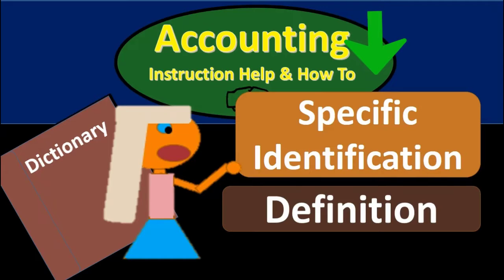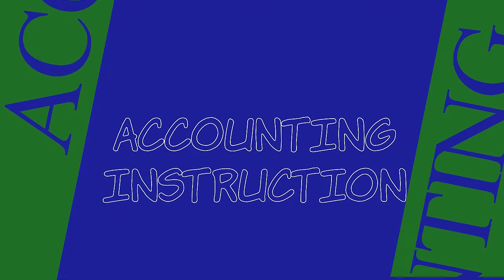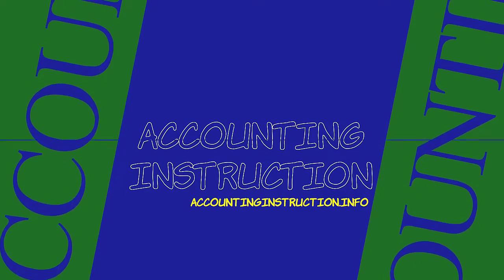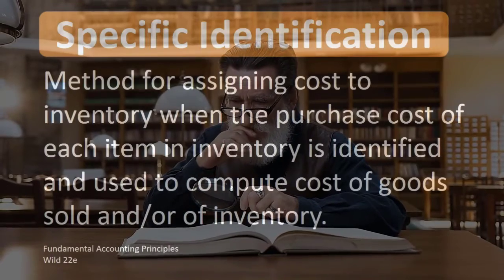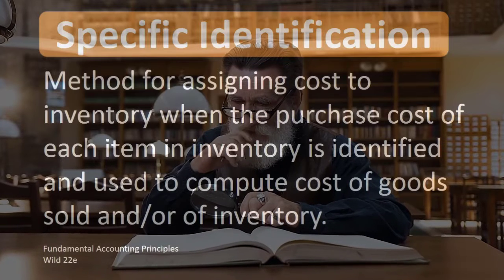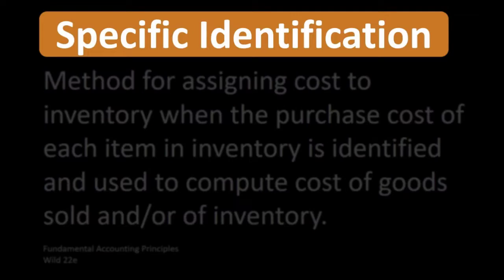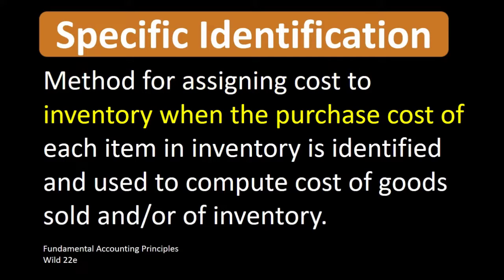In this lecture we will define specific identification. According to Fundamental Accounting Principles, 22nd Edition, the definition of specific identification is: a method for assigning cost to inventory when the purchase cost of each item in inventory is identified and used to compute cost of goods sold and/or inventory.